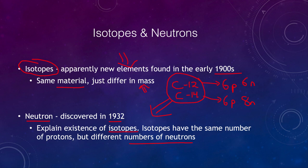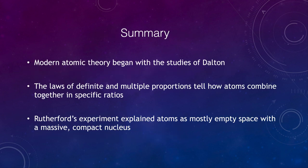So let's go ahead and finish up here with our summary. And what we find is that really, Dalton gave us the beginnings of our modern atomic theory. We looked at the laws of definite and multiple proportions to decide how atoms combine in specific ratios. And finally, Rutherford's experiment explained atoms as mostly empty space with a massive compact nucleus. So that concludes this lecture on atomic theory. We'll be back again next time for another topic in physical science. So until then, have a great day, everyone. And I will see you in class.